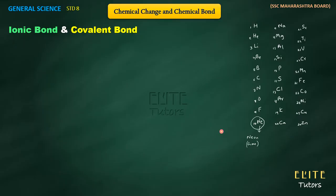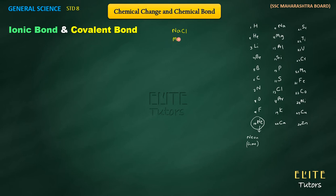Hello students, welcome back to Elect Tutors. In this video we are going to explain ionic bond and covalent bond. We will start with ionic bond, taking examples of sodium chloride NaCl, magnesium chloride MgCl2, potassium fluoride KF, and calcium oxide. Then we will study the covalent bond.